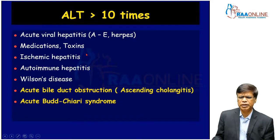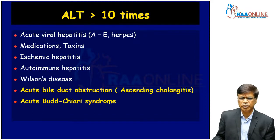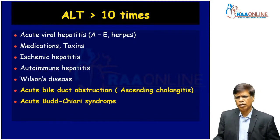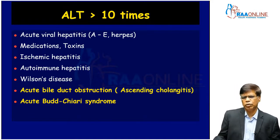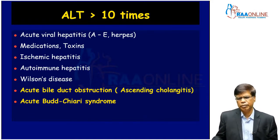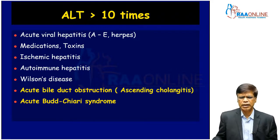Especially when the patient presents with another problem like cardiogenic shock or septic shock, a rapid rise in enzymes — often up to thousands — is due to acute ischemic hepatitis. Some chronic conditions can cause acute flare-ups where ALT can go up to 10 times normal. It is very important to recognise that chronic conditions can also have very acute presentations. Autoimmune hepatitis and Wilson's disease are classic examples.